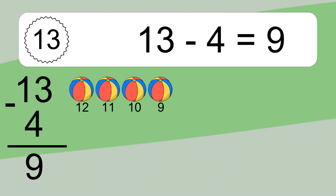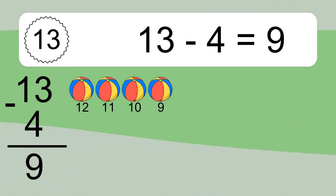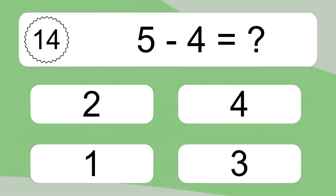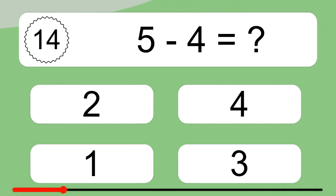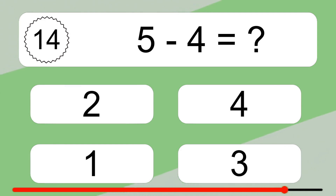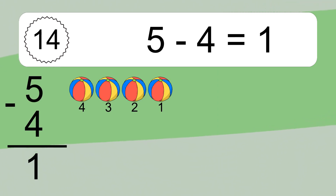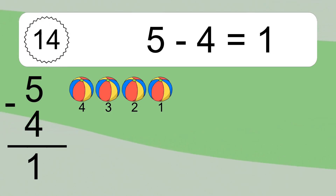13 minus 4 equals what? 13 minus 4 equals 9. Let's count it: 12, 11, 10, 9. 5 minus 4 equals 1. Let's count it: 4, 3, 2, 1.